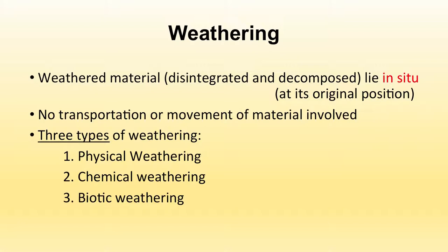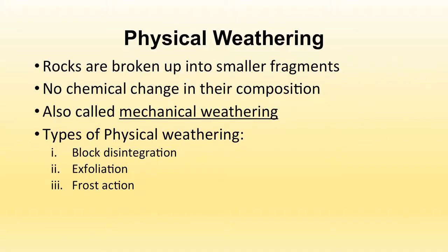There are three types of weathering: physical weathering, chemical weathering, and biotic weathering. Physical weathering means breaking up of rocks into smaller fragments. There is no chemical change involved, therefore it is also known as mechanical weathering. There are different types: block disintegration, exfoliation, and frost action.